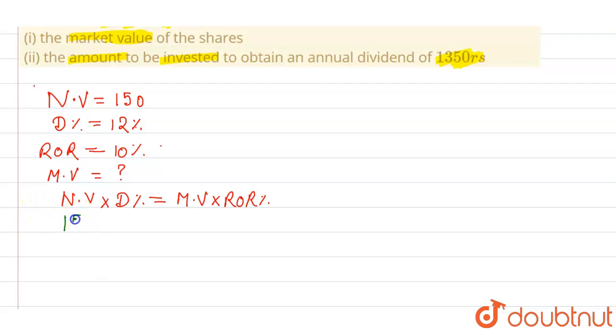So here we can write: nominal value is 150, dividend percent is 12%, equals market value times ROR 10%. Percent cancels by percent, zeros cancel. Now 15 into 12 equals 180. So market value is equal to 180 rupees. This is the answer for the first part of the question.